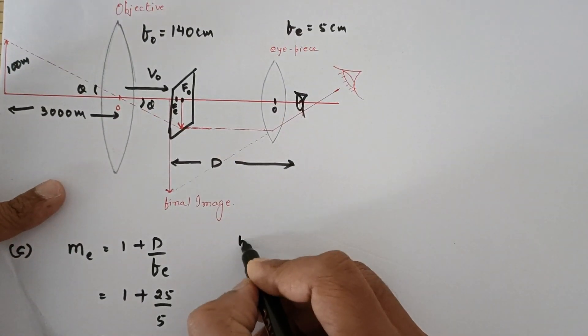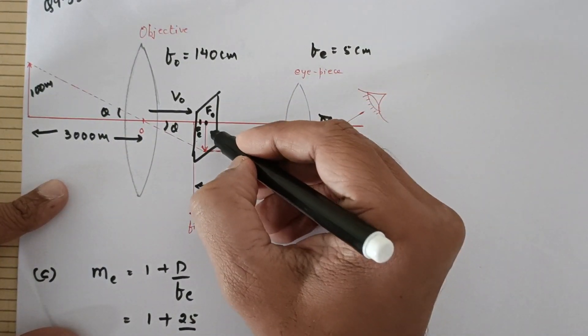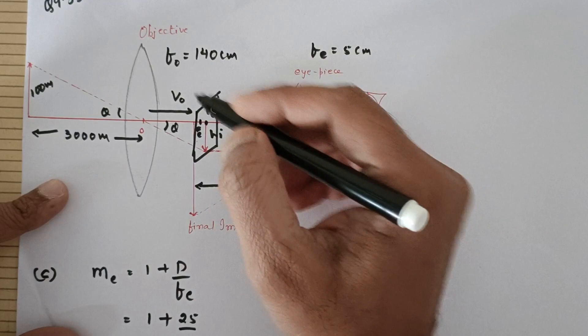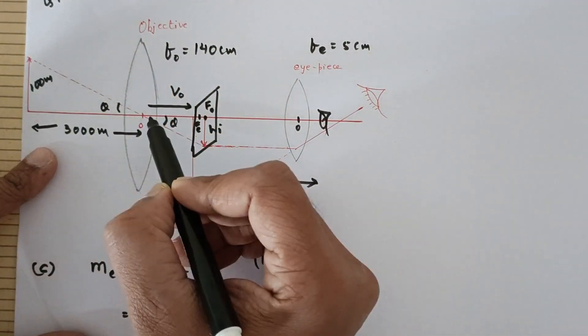Now let us solve the B part. We are supposed to find the height of this image, the height of the image which is formed at the focal length of the objective. So tan θ from here is equal to 100 upon 3000.